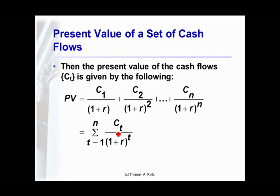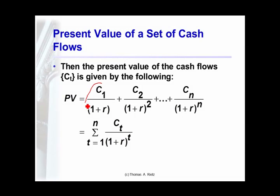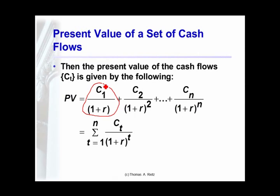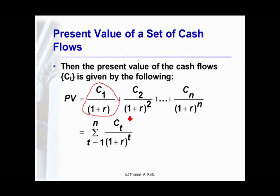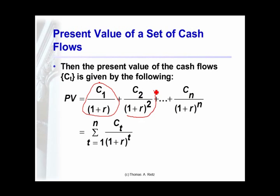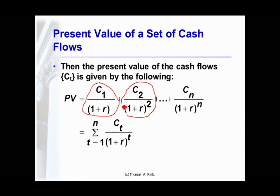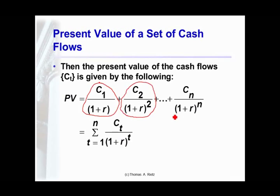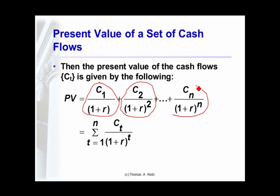But this doesn't just hold to purchase one future cash flow. If you have a whole set of cash flows, all you need to do to determine the value of it is take the cash flow at period 1 and ask yourself how much you would have to pay today to buy it. It's the cash flow in period 1 divided by 1 plus interest 1 times. The cost of the cash flow in period 2 is the cash flow divided by 1 plus interest twice. All the way out to the end, you divide by 1 plus interest, say, n times.